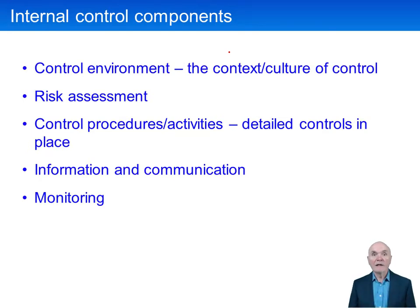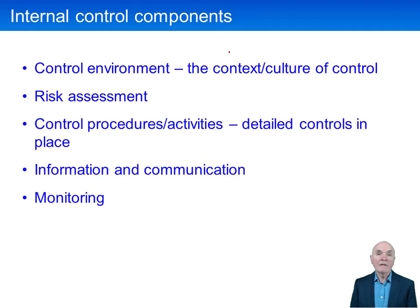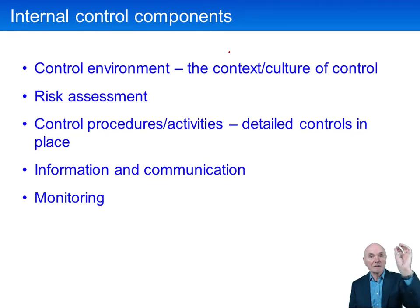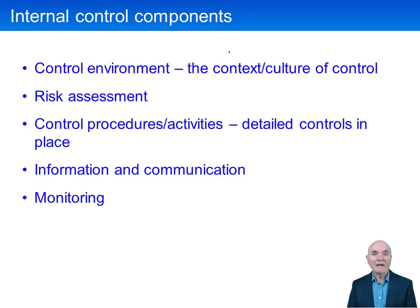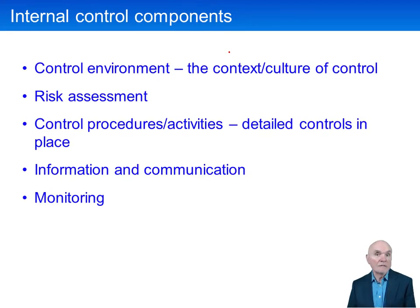There are five components of an internal control system, and it's very important that you know these. First of all, there is what's known as the control environment — sometimes called leadership from the top, or tone from the top. It's saying that if the managers and the board at the top of the organisation have little regard for internal control systems, then that attitude is going to permeate its way down through the organisation, and any system of internal control which is set up is going to fall into disuse fairly quickly, because management simply doesn't see its worth.